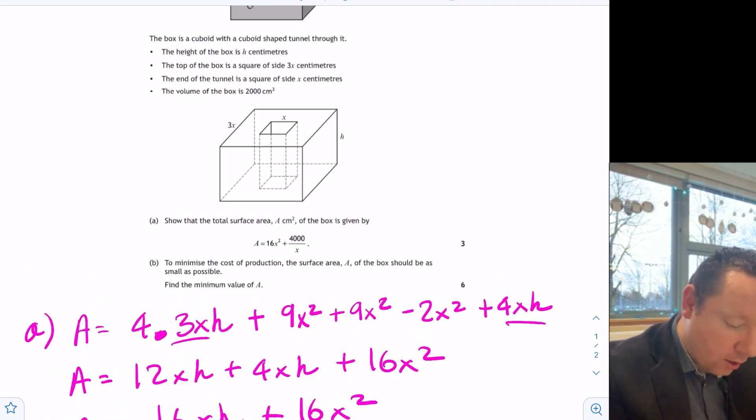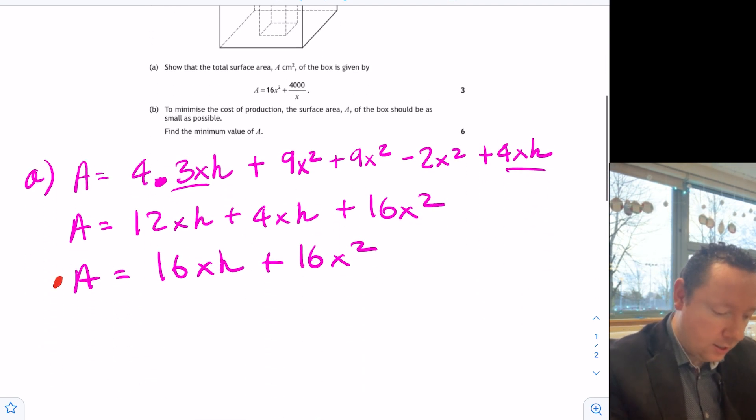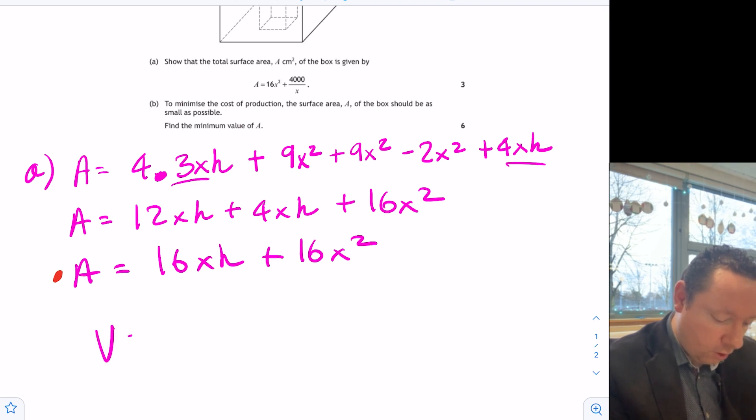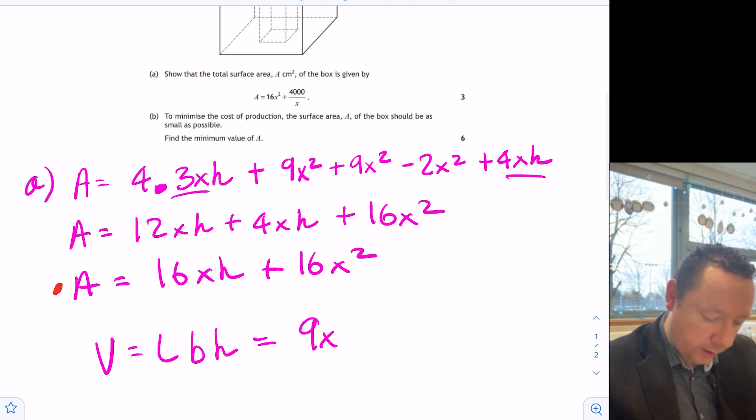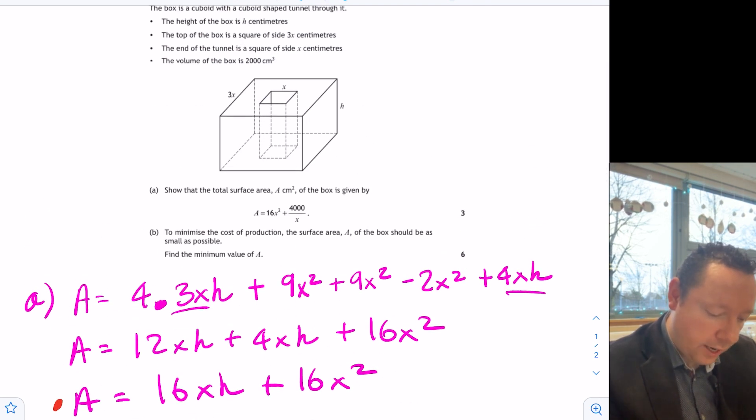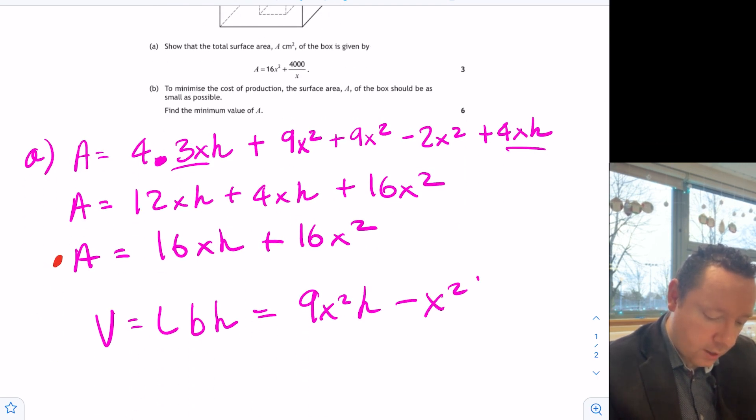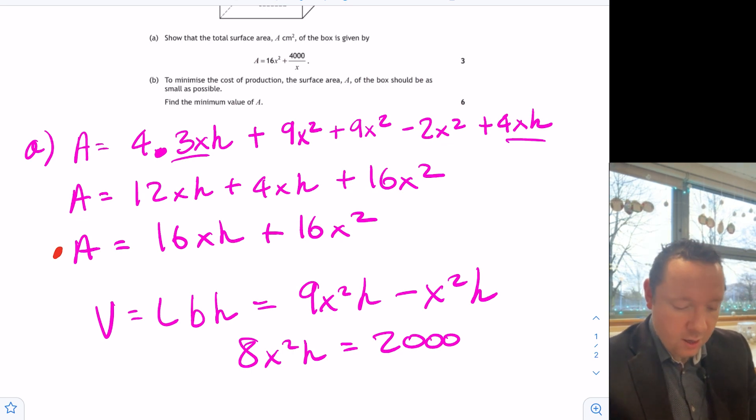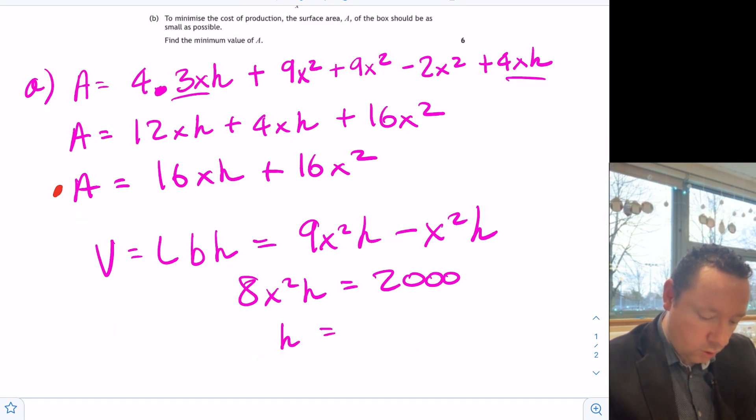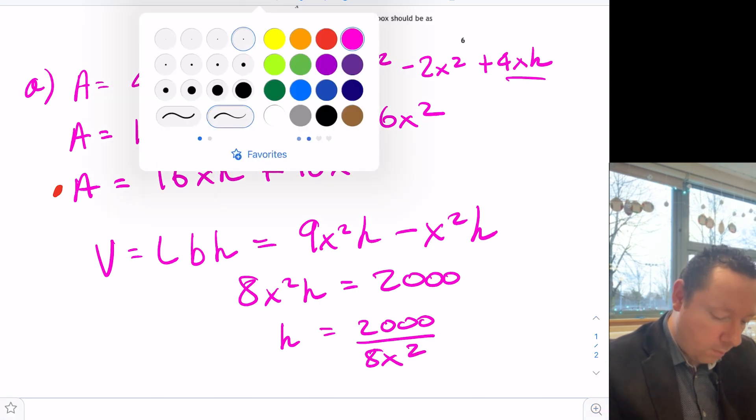The volume is 2,000. Well, volume is length times breadth times height. So if I write that down underneath. Volume is length times breadth times height. Volume of the big box, which is 3x times 3x times h. So 9x squared h. But we need to remember to take away the hole, which is x by x by h. So that's just x squared h. So our volume, 8x squared h equals 2,000 it says. So I can now eliminate h from my area by rearranging this equation to make h the subject. So that means that h equals 2,000 divided by 8x squared. A mark for getting h.